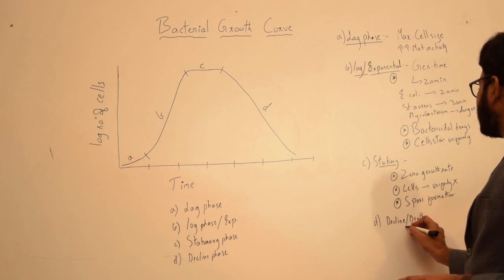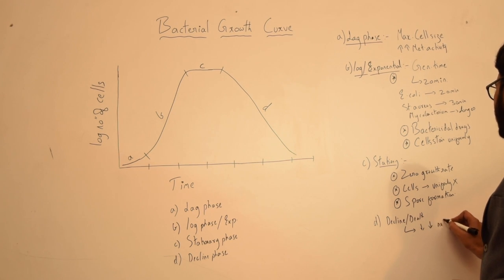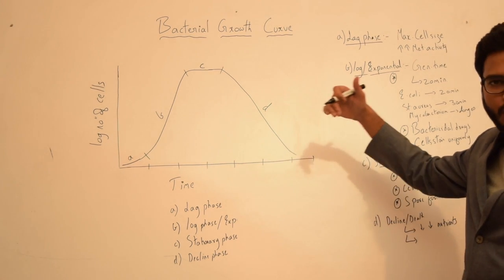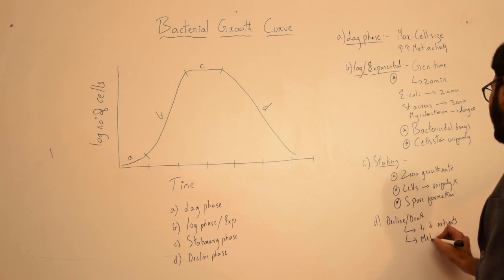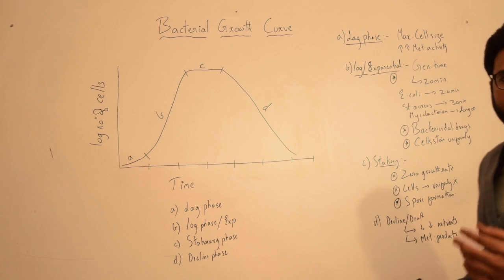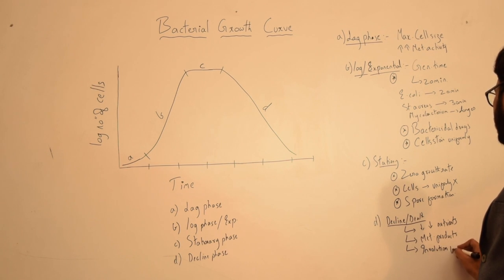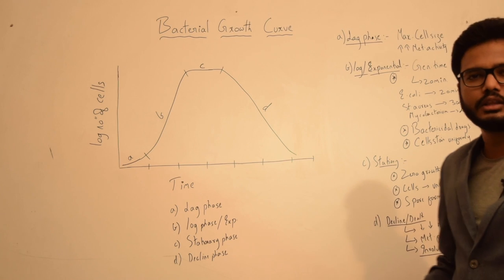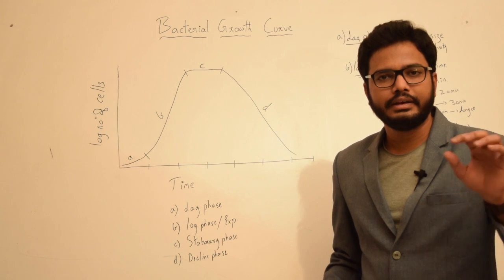In decline phase, also called death phase, the decline or death of cells occurs because of a decrease in the nutrients available within the medium and accumulation of various metabolic waste products as the cells are incubated longer. These are the reasons why there is a decline in viable bacterial cells. Involution forms — unusual shapes or forms of bacterial cells — are usually seen in decline phase.